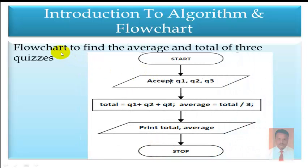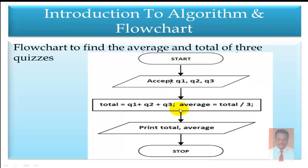Next, draw a flowchart to find the average and total of three quizzes. Step 1: Start. Step 2: Accept inputs Q1, Q2, Q3. Step 3: Total = Q1 + Q2 + Q3. Step 4: Average = Total / 3. Step 5: Print the Total and Average. Step 6: Stop.